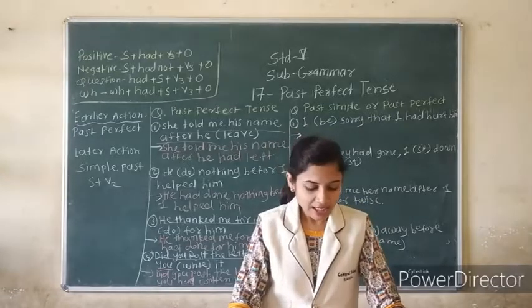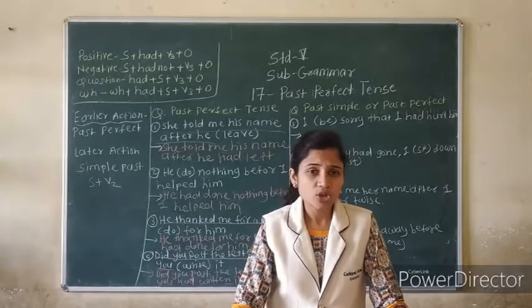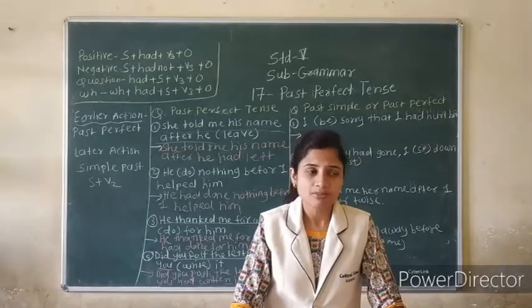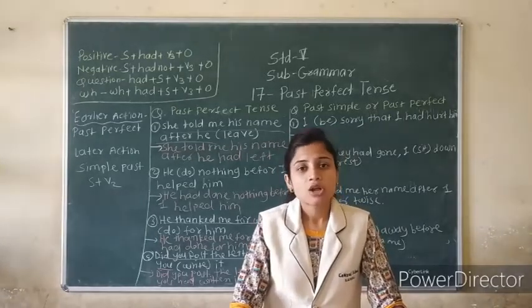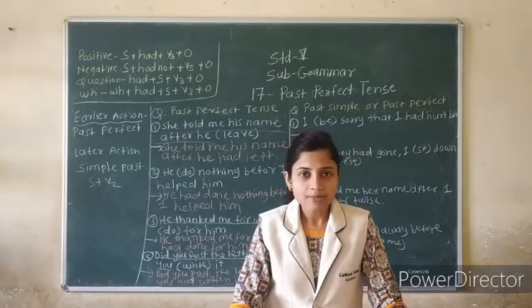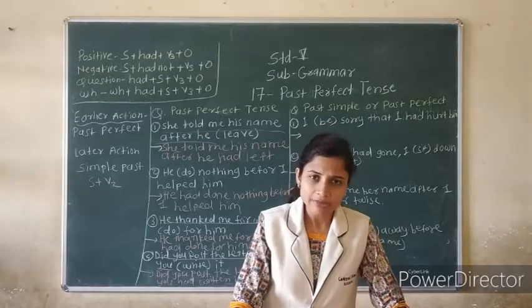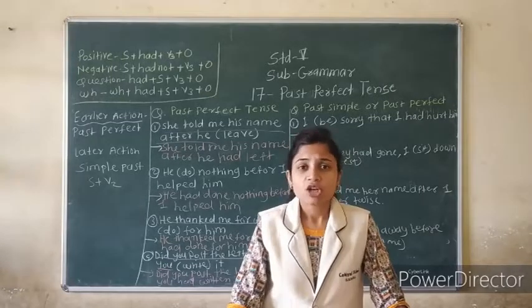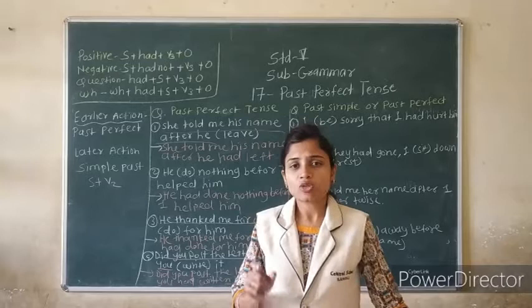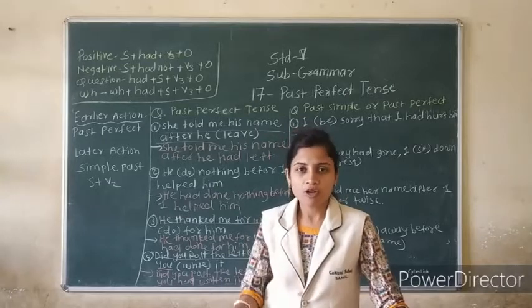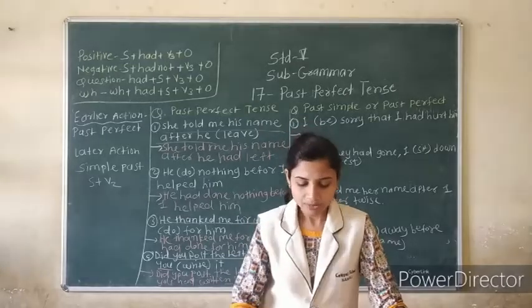Do you understand? Like this, you are using only Past Perfect — Subject plus Had plus verb 3. Already subject is given; where there is a bracket you are only using Had plus verb 3.